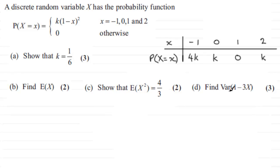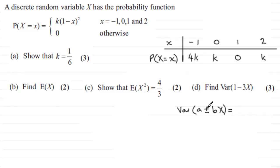When it comes to finding the variance of 1 minus 3x, we build this up from this result which you should be familiar with. The variance of a constant plus or minus another constant times a random variable x is exactly the same as the variance of the constant, which is always 0, so we can neglect that. The plus or minus sign just becomes a plus, and then we just have b squared times the variance of your random variable — so it is b squared times the variance of x.